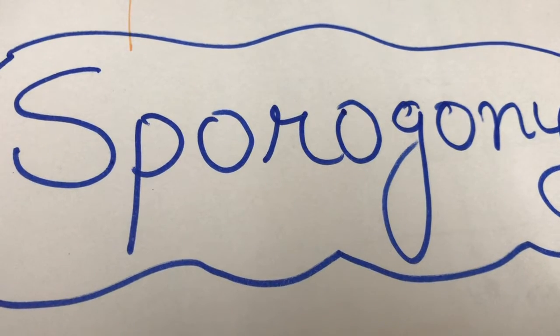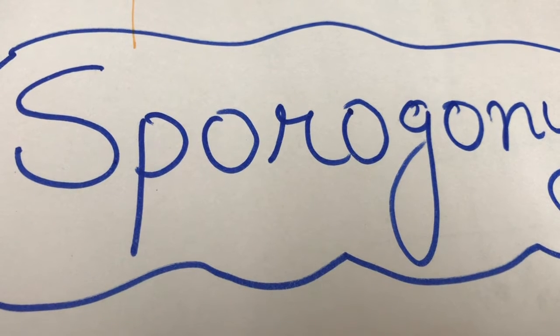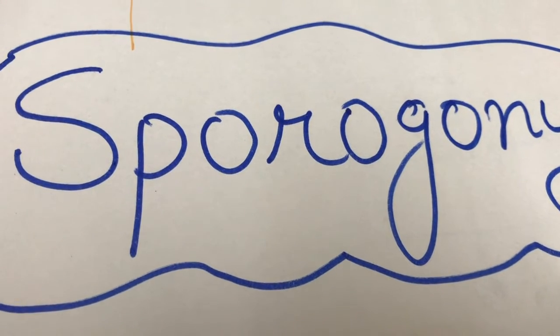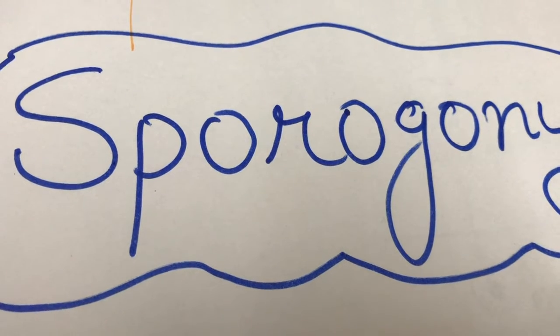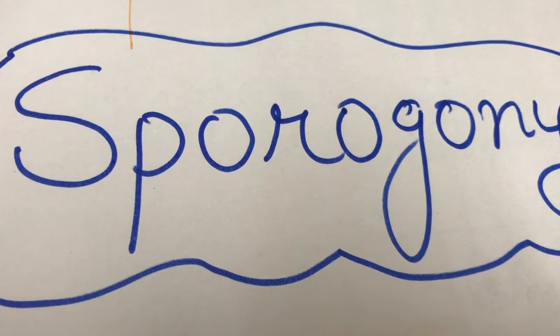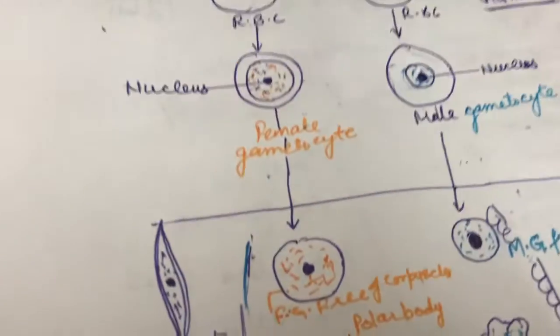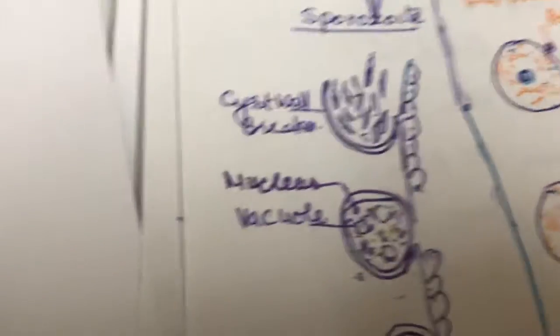The oocyst grows and draws nourishment from the mosquito through a permeable cyst wall. The cyst wall also enlarges and accumulates, growing the parasite. The cytoplasm of the oocyst develops a number of vectors.